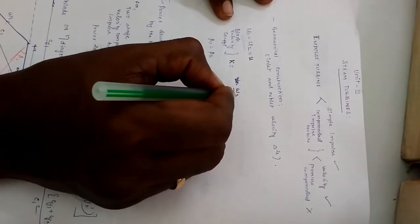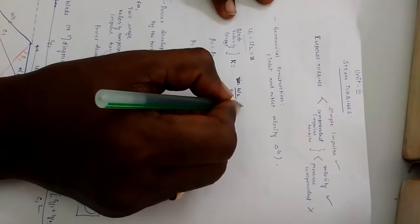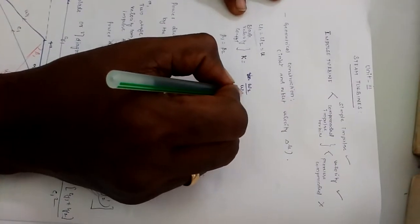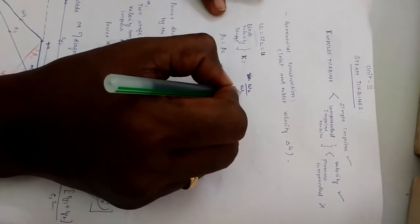That is omega. w2 and w1 are the relative velocity at outlet and relative velocity at the inlet.